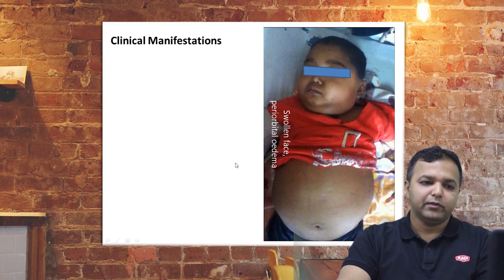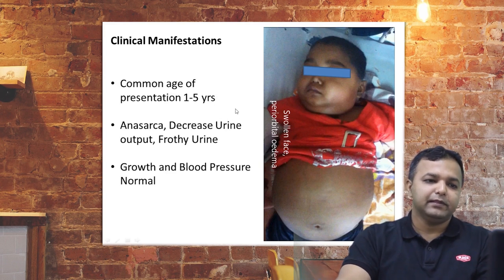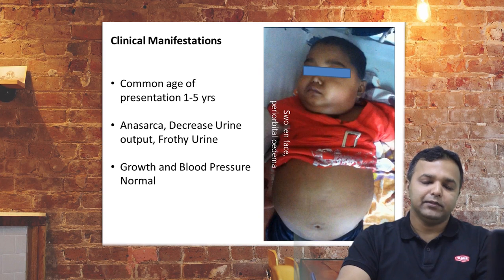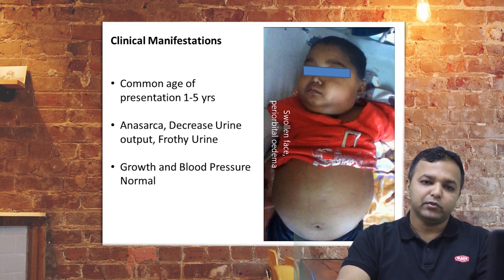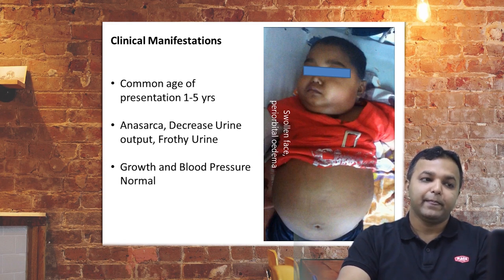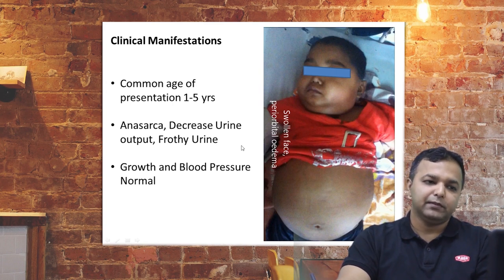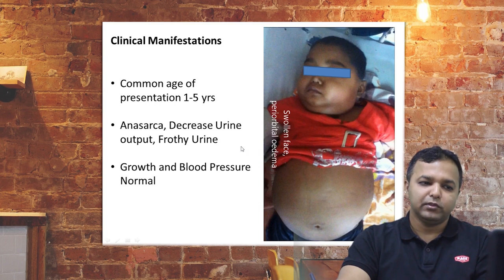Clinical manifestations are quite obvious. The child may present with ascites and periorbital facial edema. There is a classical history of edema for two to three weeks' duration, starting from the face, and most of the facial edema is noted in the morning, classically decreasing as the day progresses. The common age of presentation is between one to five years. There is decreased urine output, and the urine produced is frothy because of the presence of albumin. In idiopathic primary nephrotic syndrome, growth is normal and blood pressure also appears to be normal.